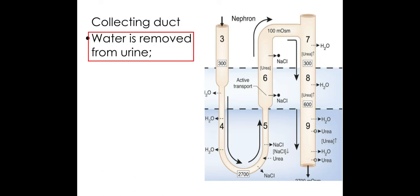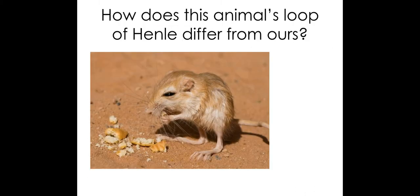The collecting duct is where water is removed from the urine. This is influenced first by the water potential, which decreases down the medulla, but it can also be impacted by hormones — which we'll look at in the next video.